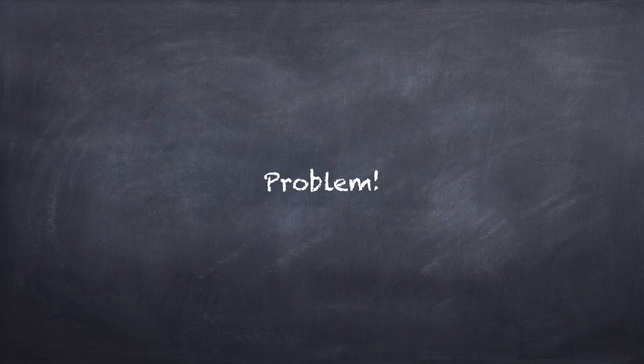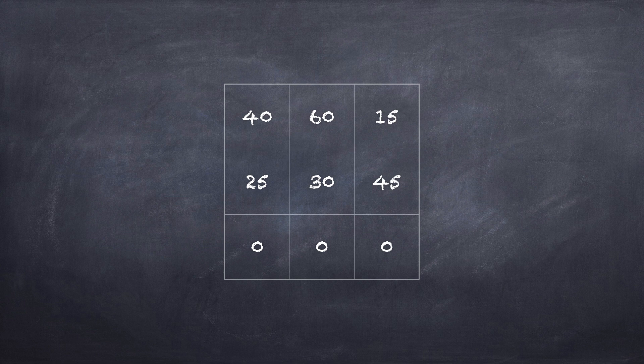What happens if you have more workers than jobs or jobs than workers? Simply add extra rows or columns filled with zeros and discard any assignments of these in the final solution.